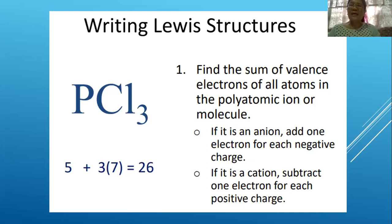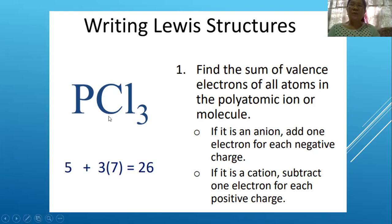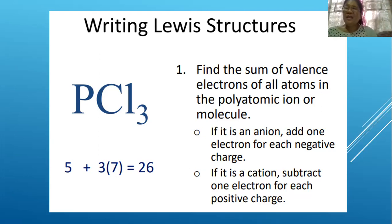So how are we going to write the Lewis structure? The first thing to do is get the sum of the valence electrons of all elements in the given compound. The valence electron is the electrons in the outermost shell, and the valence electron is equal to the group number of the element in the periodic table.